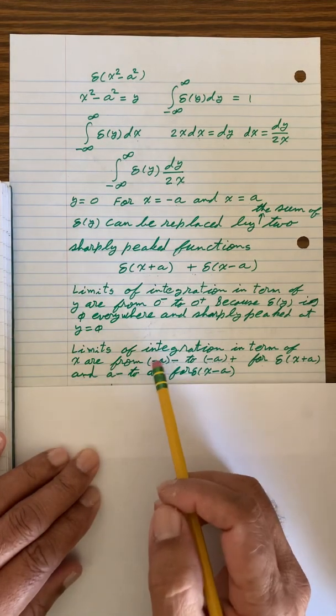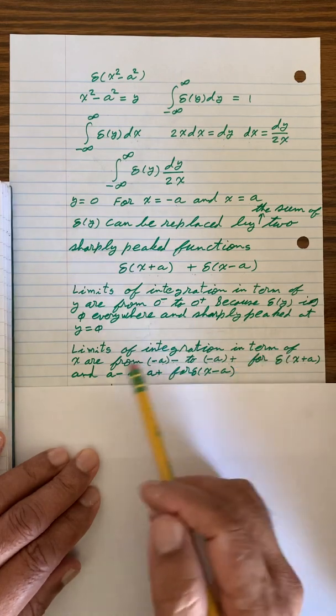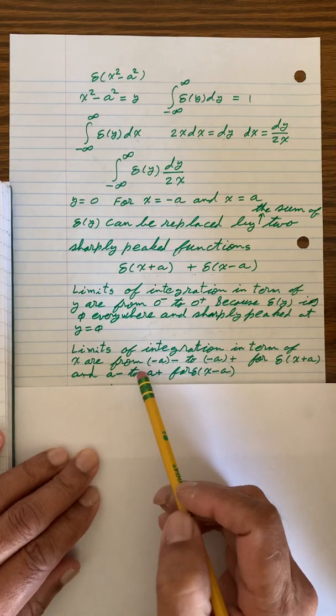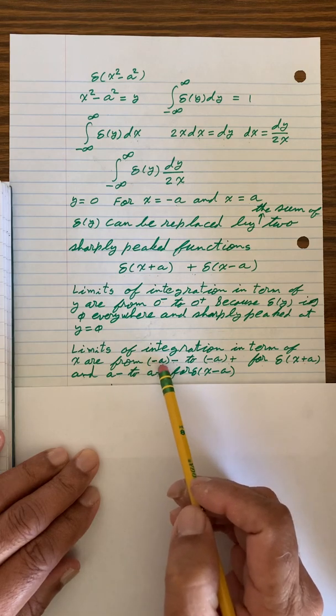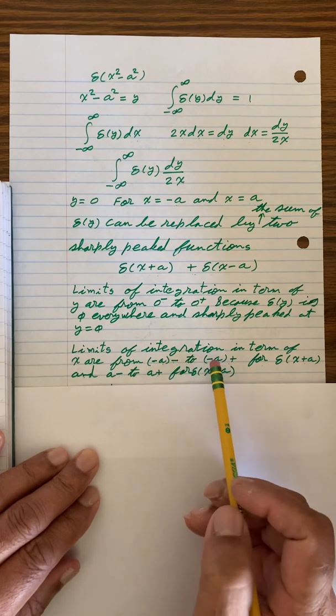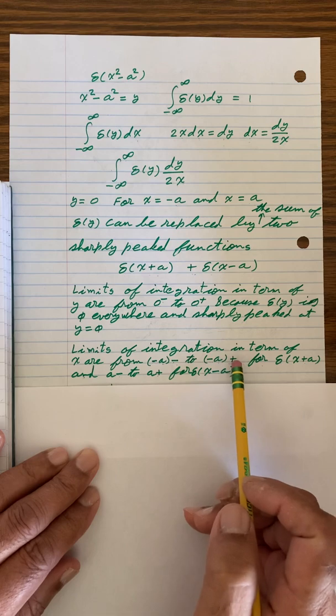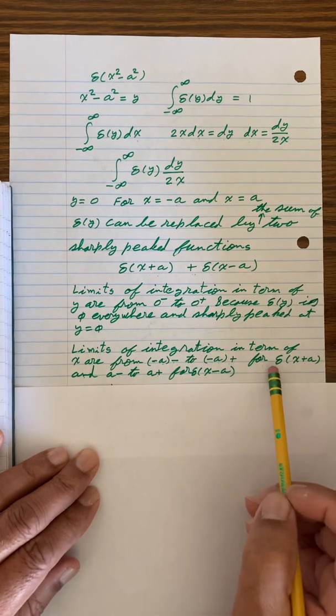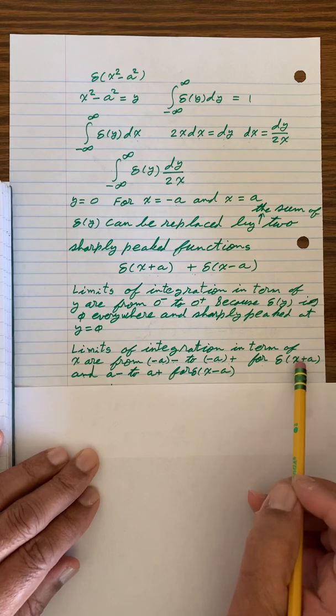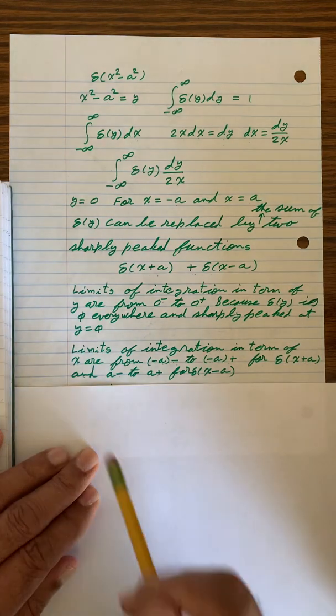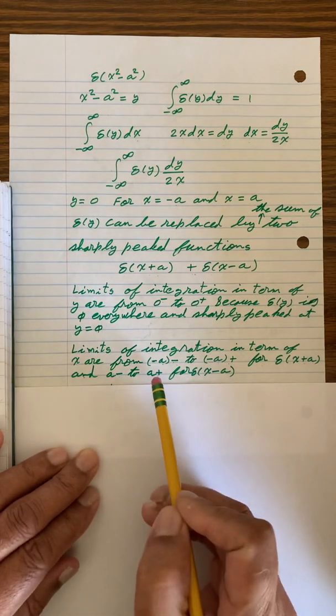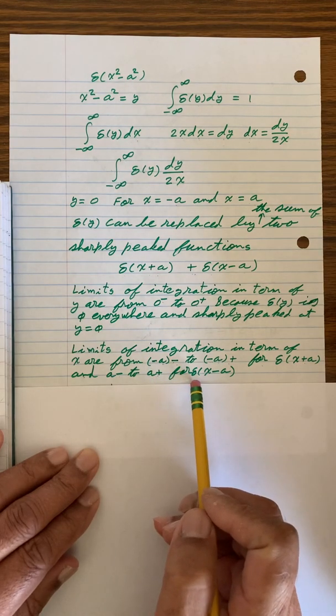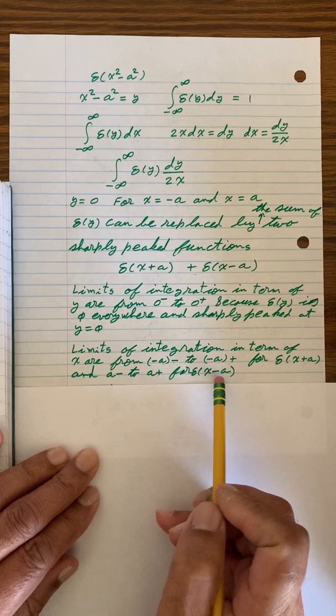The same way limits of integration in terms of x are from minus a minus to a little bit to the right. And for x minus a, they go from a minus to a plus for delta x minus a.